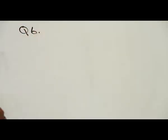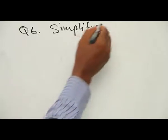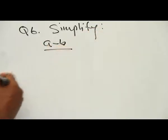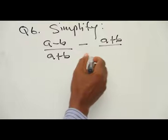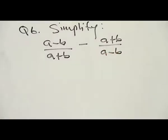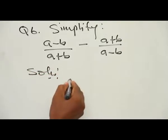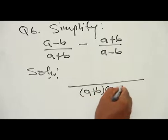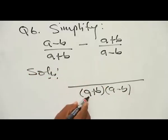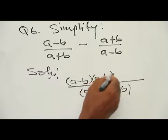Question number 6: Simplify (A minus B) all over (A plus B) minus (A plus B) all over (A minus B). Before factorizing, we need to find a common denominator. The common denominator is (A plus B)(A minus B). After multiplying through, we get (A minus B)(A minus B) minus (A plus B)(A plus B), all over (A plus B)(A minus B).